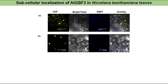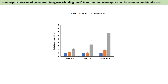We selected three target genes from microarray analysis and checked their expression under combined stress in wild-type, ATGBF3 mutant, and ATGBF3 overexpression plants by RT-qPCR. The genes were ATPILS5, ATPIL5, and ATGLR2.5. These genes contained the ATGBF3 binding motif in their promoters. We found that expression levels of ATPILS5, ATGLR2.5, and ATPIL5 were dramatically upregulated in ATGBF3 overexpression plants.